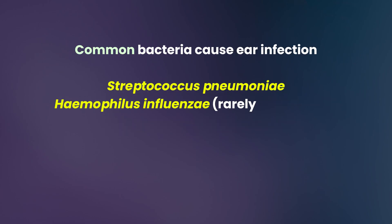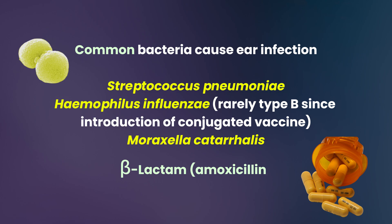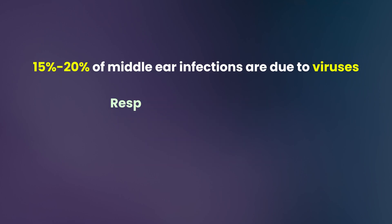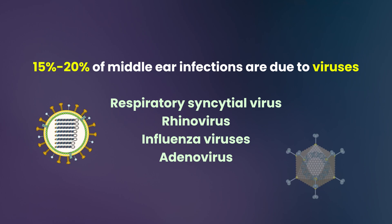Common bacteria that cause middle ear infection, in order of prevalence, are Streptococcus pneumoniae, Haemophilus influenzae (although rarely type B since the introduction of the conjugated vaccine), and Moraxella catarrhalis. Appropriate antibiotic coverage involves a beta-lactam such as amoxicillin. Less common organisms include Group A Streptococci, Staphylococcus aureus, Pseudomonas, and in newborns, Gram-negative bacilli. Approximately 15 to 20 percent of middle ear infections are due to viruses, including respiratory syncytial virus, rhinovirus, influenza viruses, and adenovirus.